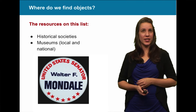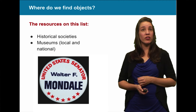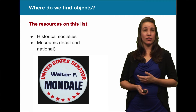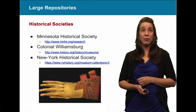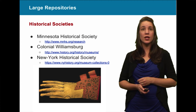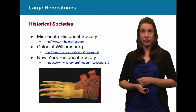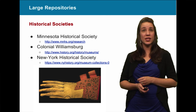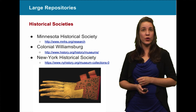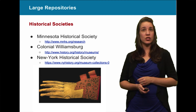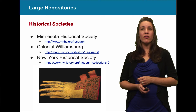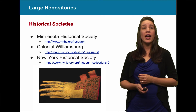So where do we find these objects? Local and state historical societies are a great place to find objects online. The Minnesota Historical Society has thousands of artifacts that are digitized and viewable on their website. Colonial Williamsburg is a great place to get artifacts from the Colonial, Revolutionary, and New Nation period. Other state historical societies, such as the New York Historical Society, have great things relating to both state and national history.